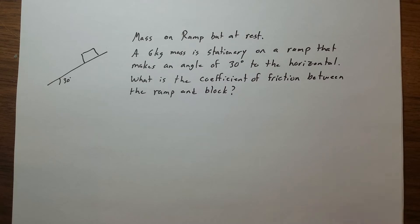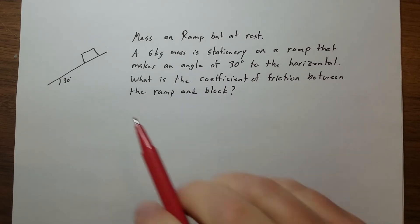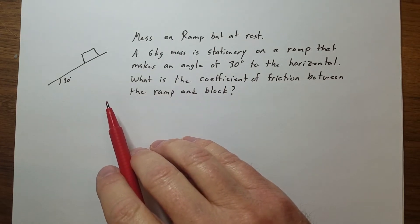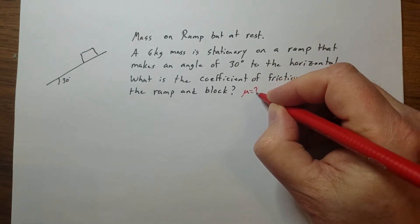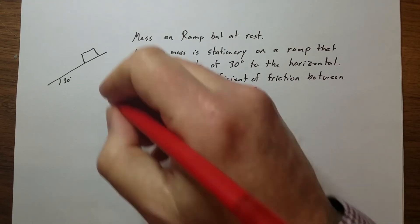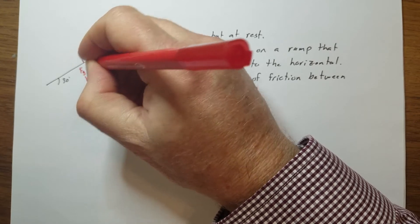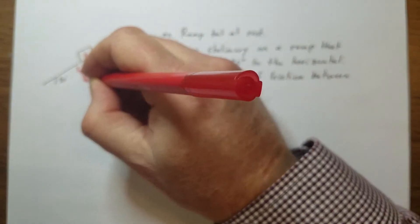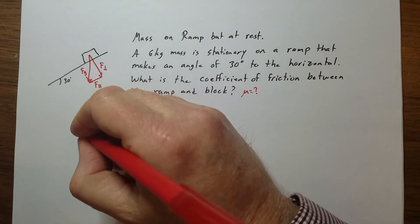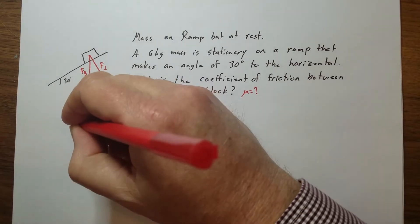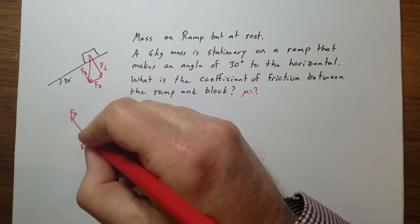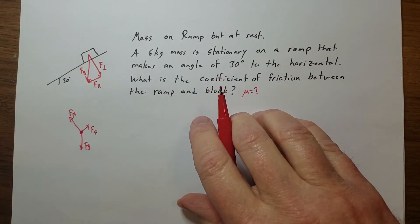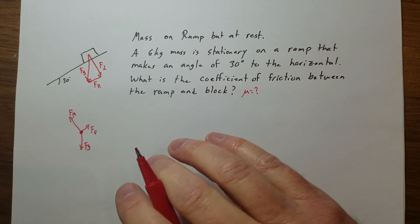Now let's add friction. We have a block on a ramp released from rest: mass of 6 kilograms, angle 30 degrees to the horizontal. We want to find the coefficient of friction, so we want to find mu. We draw the component triangle — perpendicular to the surface and then complete the triangle. The free body diagram has gravity acting down, the normal force perpendicular to the surface, and friction. This object is stationary, so we're looking for the coefficient of static friction.